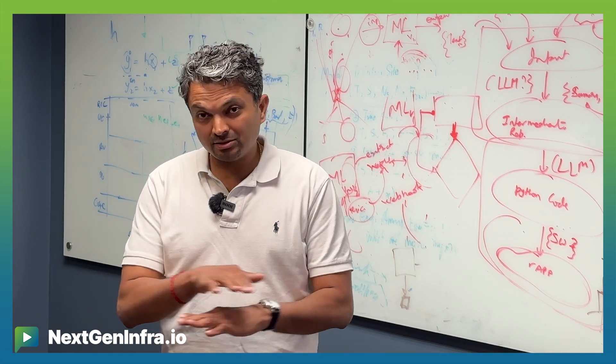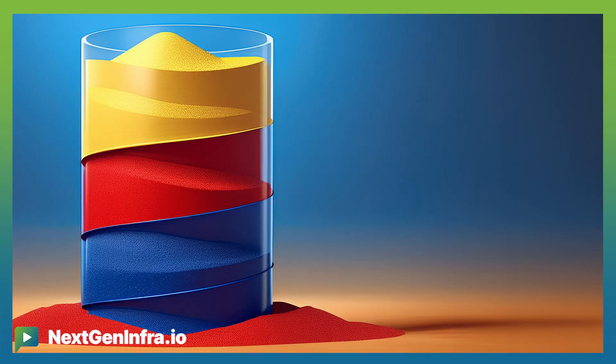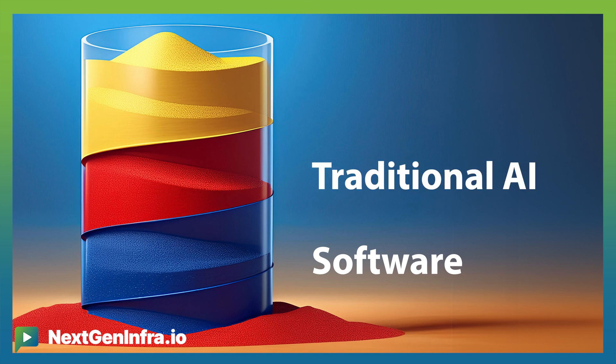We really think of it as three layers. There's the first layer, which is just standard good software. Then there's one layer above that, which could be called traditional AI.